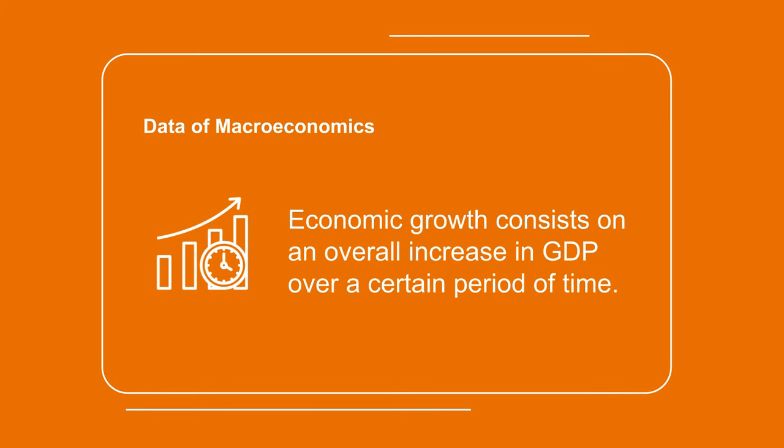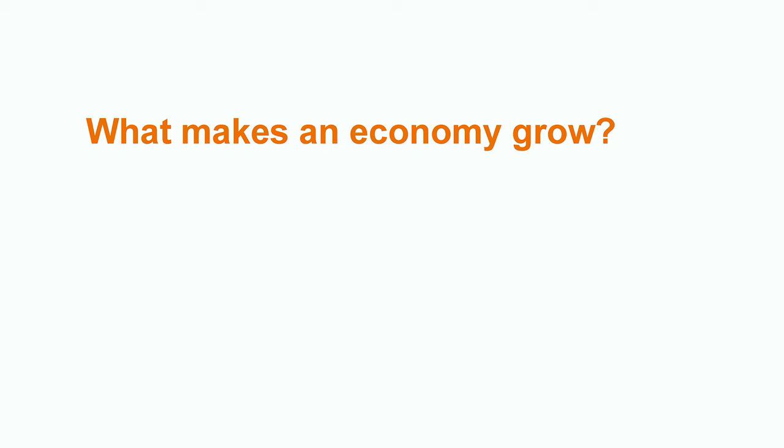Economic growth consists of an overall increase in gross domestic product over a certain period of time. Although GDP variation reflects how an economy grows, this can be caused by different factors. The important issue is how can this growth be explained, or what makes an economy grow? Every transaction in an economy consists of a certain quantity given a certain price. So that means an economy can grow for two reasons. One reason may be that it's producing more and making more transactions — a rise in quantity or output. More products are being sold, more people are consuming, more transactions are being made.